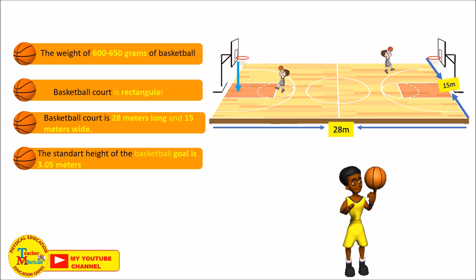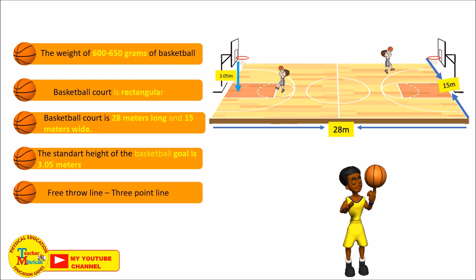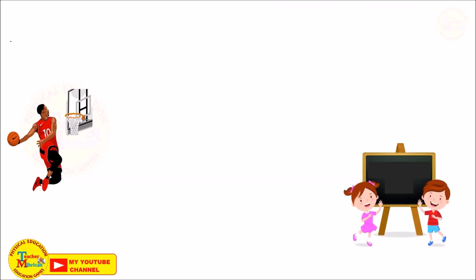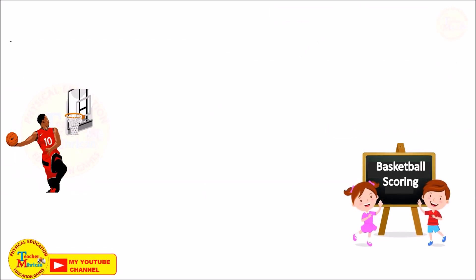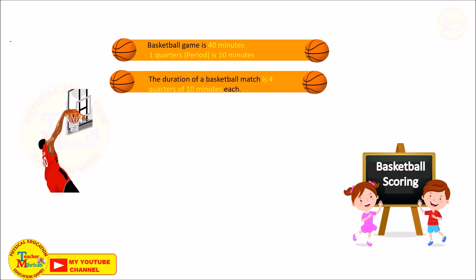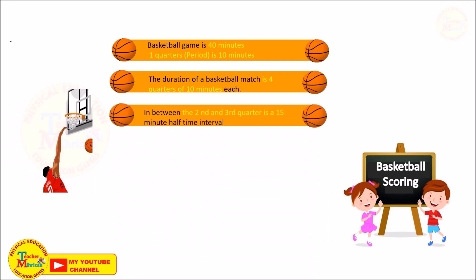The standard height of the basketball goal is 3.05 meters. There is a free throw line and a 3-point line. A basketball game is 40 minutes long. One quarter period is 10 minutes, making the duration of a match 4 quarters of 10 minutes each. In between the second and third quarter is a 15-minute half-time interval.